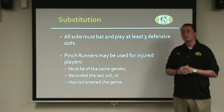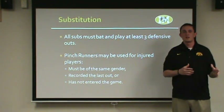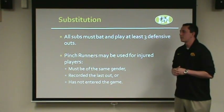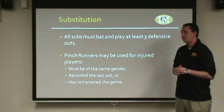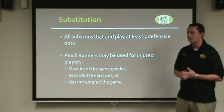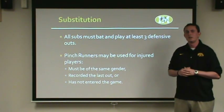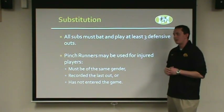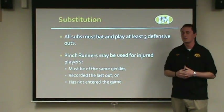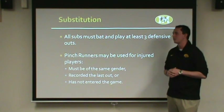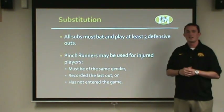For substitution purposes, all substitutes must bat and play at least three defensive outs before that person can come out of the game. Once you have a substitute, they've got to take an at-bat at the plate and play at least a half inning in the field before being taken back out. Pinch runners may be used for injured players — if someone gets on base but is injured and can't run the bases well, you can substitute a pinch runner. The pinch runner must be of the same gender, and in co-rec must be the person who recorded the last out of the same gender, or a same-gender roster member who has not yet entered the game.